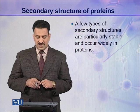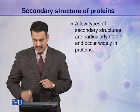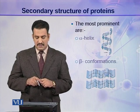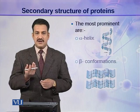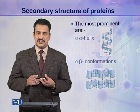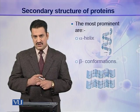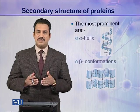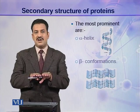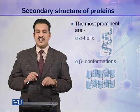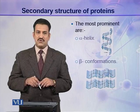However, a few types of secondary structures are particularly stable and occur widely in proteins. These types include alpha helix and beta conformations. In alpha helix, a polypeptide chain is helically coiled around an imaginary axis, and this structure is very prominent in proteins. In beta conformations, polypeptide chains stretch side by side longitudinally and form sheets called beta sheets. Alpha helix and beta sheets are the prominent secondary structures found in different protein molecules.